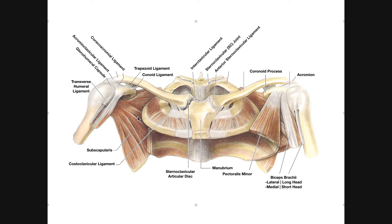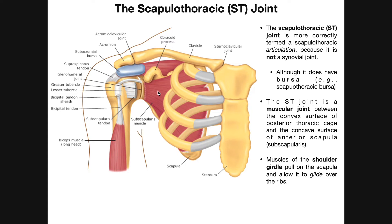And finally we have the subscapularis muscle, which is the anterior rotator cuff muscle. Now let's talk about the scapulothoracic joint or ST joint. A better name is really the scapulothoracic articulation, because it's not a synovial joint — it's actually what we call a muscular joint, which we'll talk about in a minute.